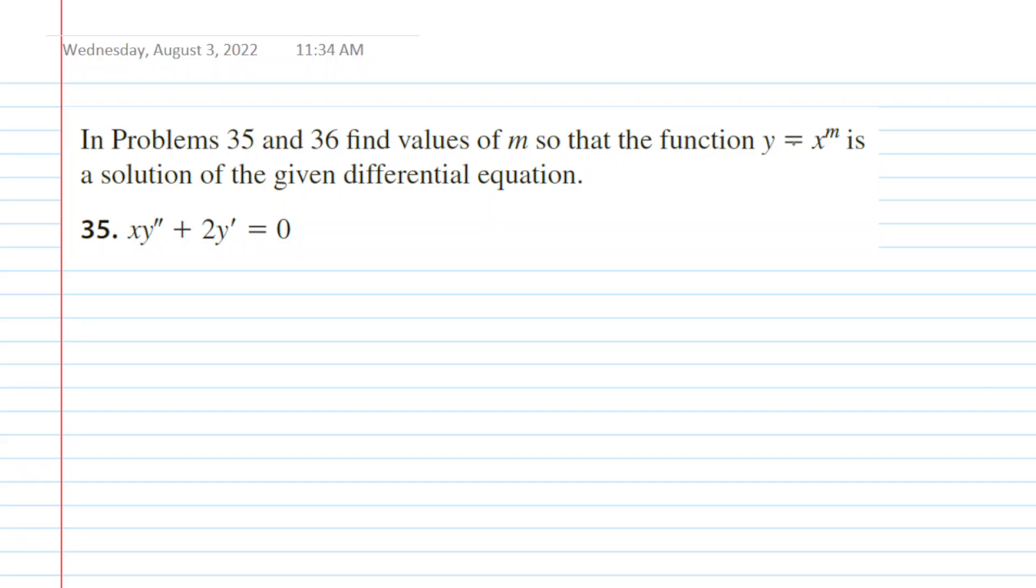Our given function is a power function, y equals x to the power of m. We look at our differential equation and notice that two different derivatives appear: the second derivative as well as the first derivative. This tells us that we need to take our power function and differentiate it two times, once to get y prime and then a second time to get y double prime.